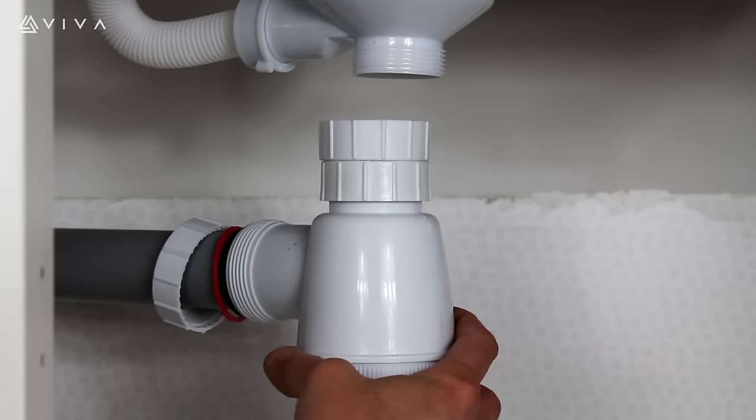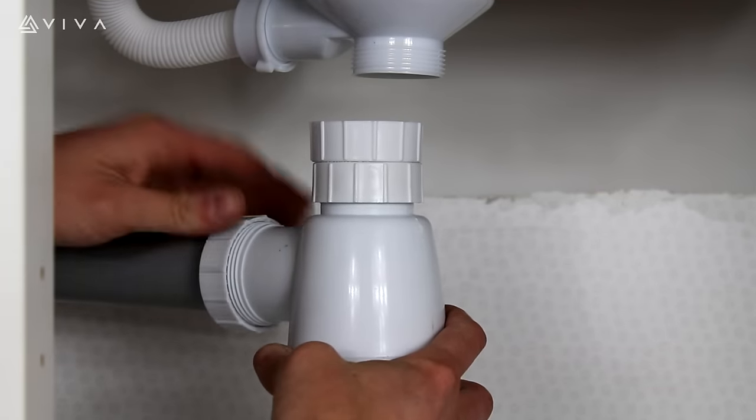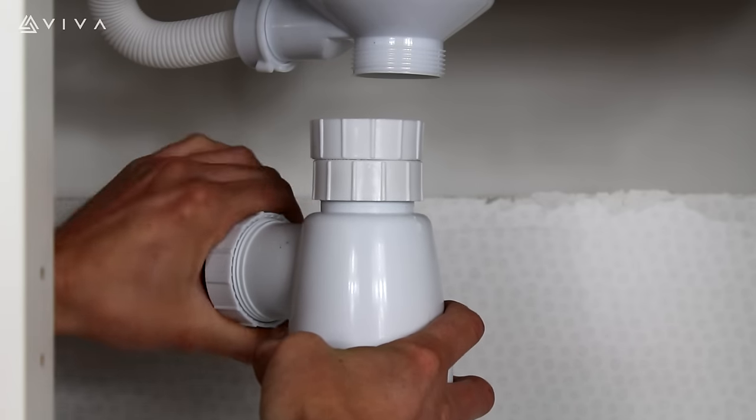Place the trap outlet over the pipe and align the outlet nut to the thread, and hand tighten clockwise.